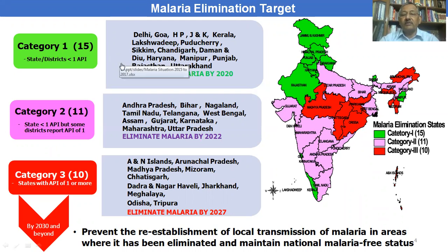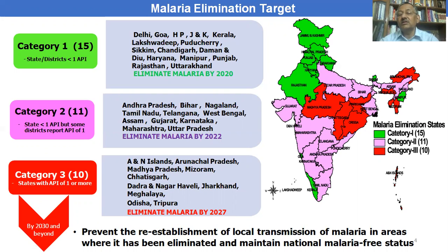Starting from the lower category: Category 1, the green color, has 15 states already showing below one API threshold. Category 2, the pink color, has 11 states where the average API is less than one, but some districts are above one. I am showing state-wise categorization because in India health is a state subject and implementing agencies are the states — so first we take the state and then drill down to district level.